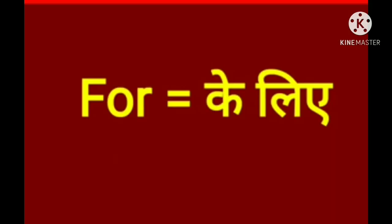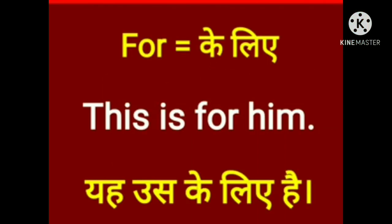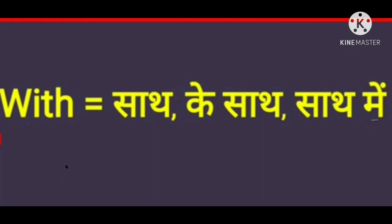Next is 'for'. For means 'ke liye' (for/in order to). For is basically used for reasons and purpose — jab hum kisi kaam ka reason dete hai ya apne kaam ka purpose batate hai, toh hum use karte hai 'for'. Example: This is for him — yeh uske liye hai.